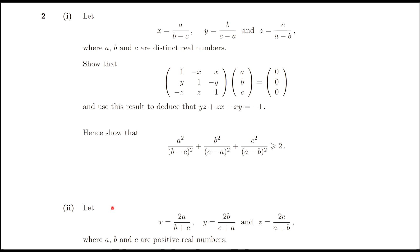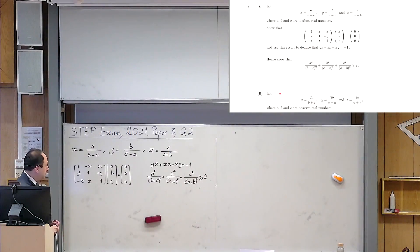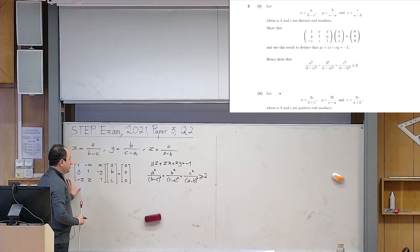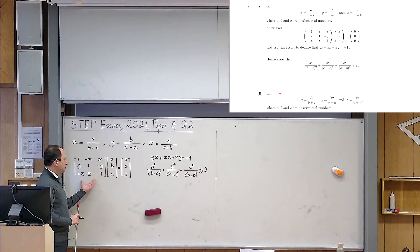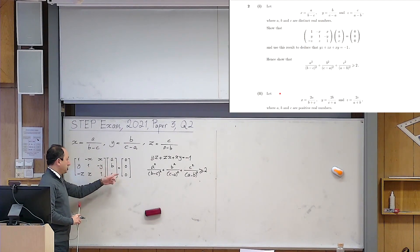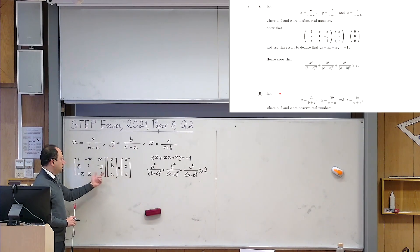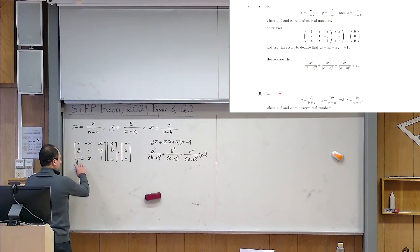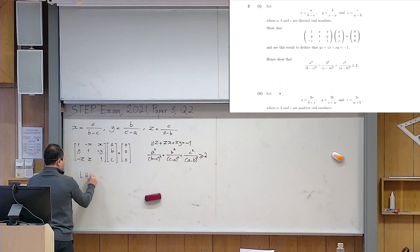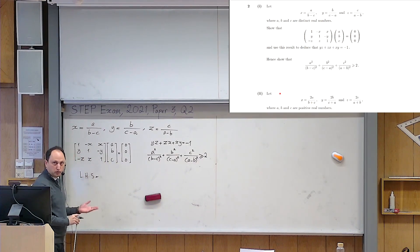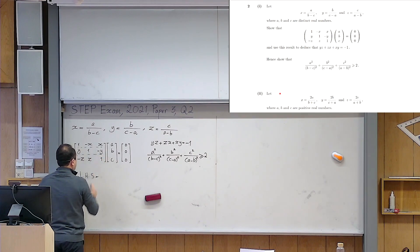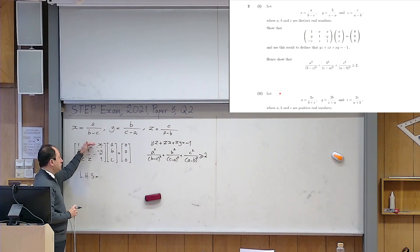Now let us go to the board and solve the problem together. The first thing I want to do is prove this matrix multiplication equality. I want to multiply this 3 by 3 matrix by the column matrix, where x, y, z and a, b, c are related as given, and show that this product is always the zero matrix. I start from the left hand side and multiply using the normal rule for matrices, partitioning the left hand side matrix into rows and multiplying each row by that column.